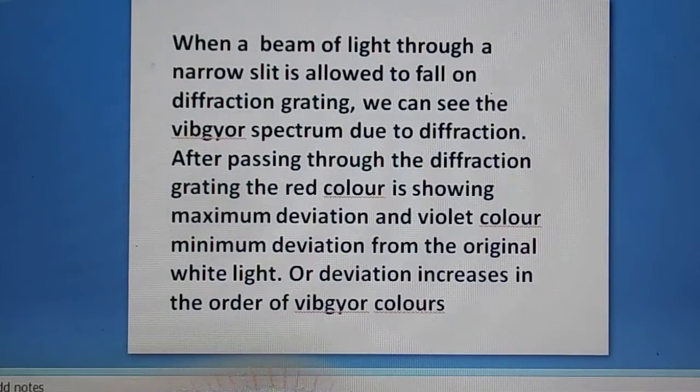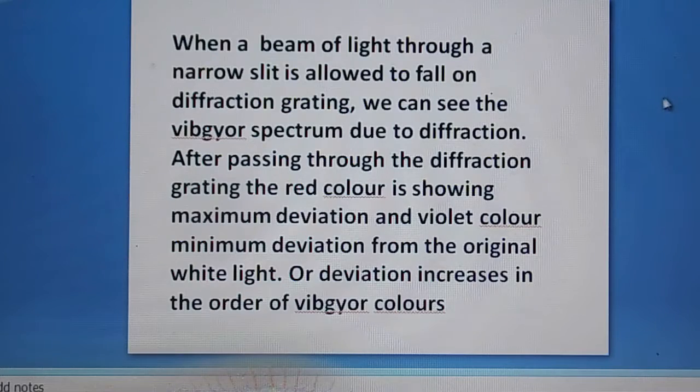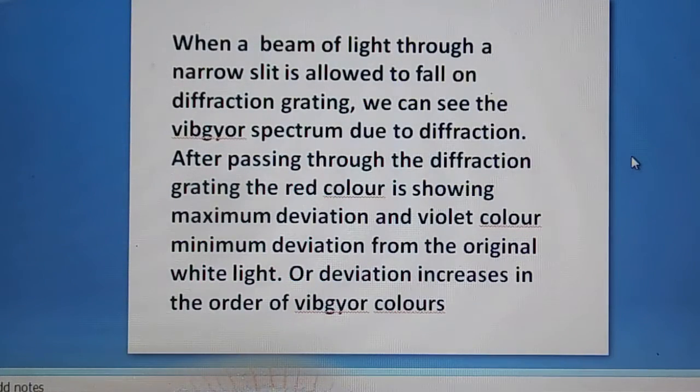When a beam of light through a narrow slit is allowed to fall on diffraction grating, we can see the VIBGYOR spectrum due to diffraction. After passing through the diffraction grating, the red color is showing maximum deviation and violet color minimum deviation from the original light, or deviation increases in the order from violet to red. Red is showing maximum deviation and violet minimum deviation of colors.